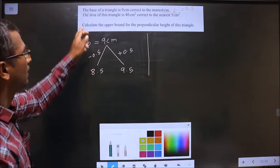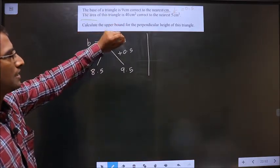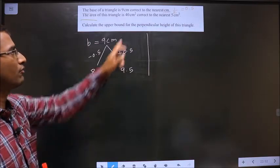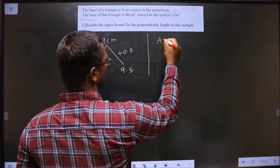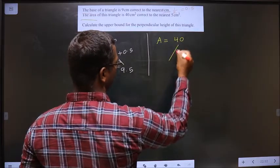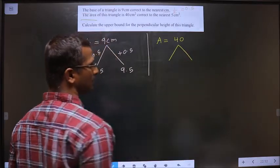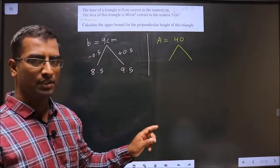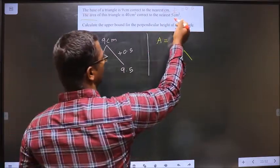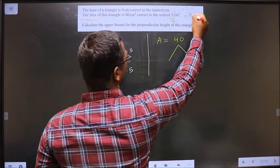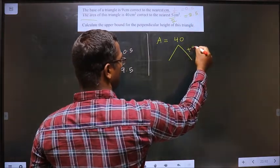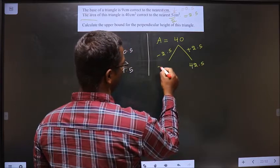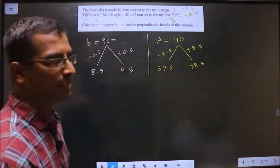Let us continue. The area of this triangle is 40 cm square, correct to the nearest 5 cm square. So now let us write lower and upper bound for 40. So area is 40 cm square. What should I subtract and add to get lower and upper bound? It is corrected to the nearest whatever, we should do half of that. So it is corrected to the nearest 5, so do half of that, we get 2.5. So this we add and subtract. So I get 42.5 and here 37.5. Let us continue.